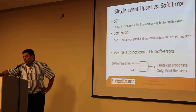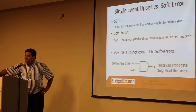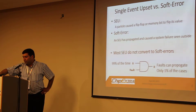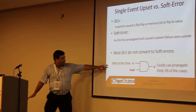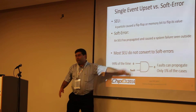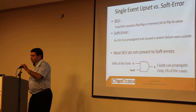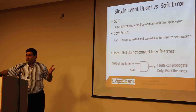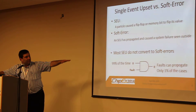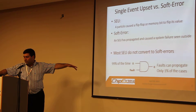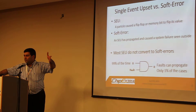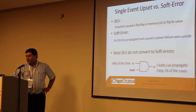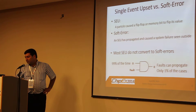We know that most SEUs do not convert to soft errors. For example, if you have a signal whose value is zero 99% of the time, it's masking the other side — so if a fault happens, 99% of the time the fault will not propagate. This is the basis of our solution: we detect these cases.